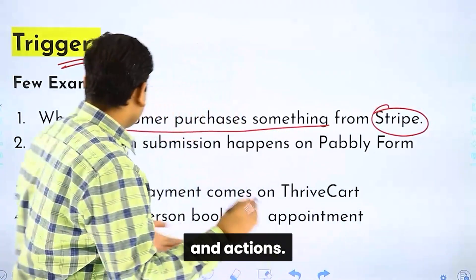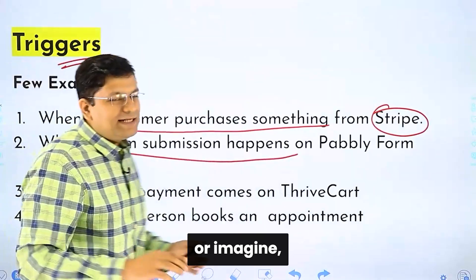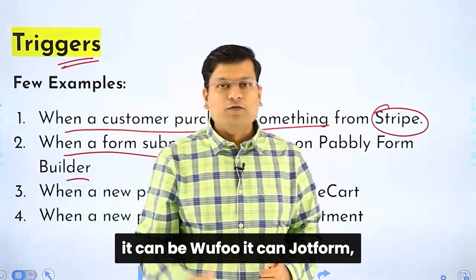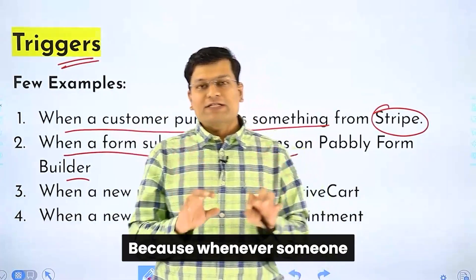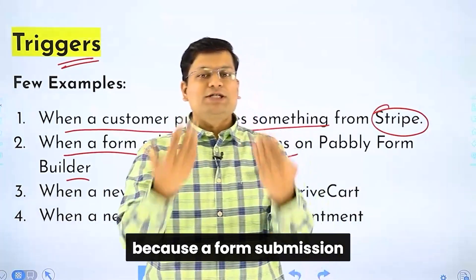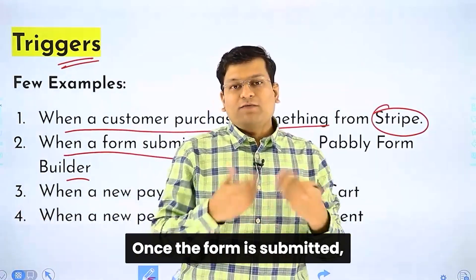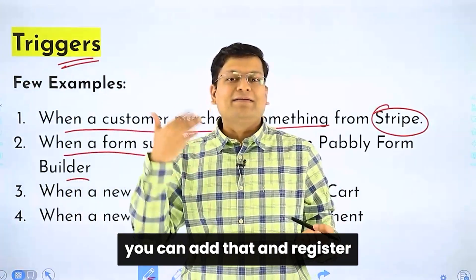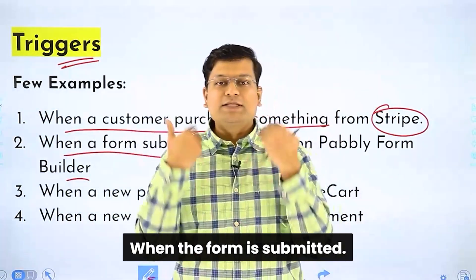The next trigger example is when a form submission happens on Pably Form Builder — or imagine any form builder: Google Forms, Wufoo, JotForm, Pably Form Builder. Whenever someone submits a form, it is an event that happens, and you can take any action step you want. Once the form is submitted, you can send an email to that person or register them inside a webinar. This is the trigger step — when the form is submitted.